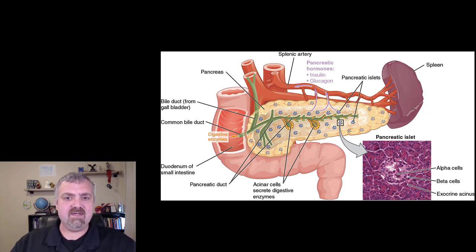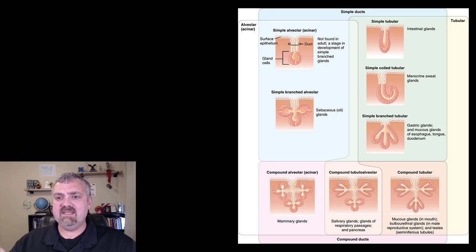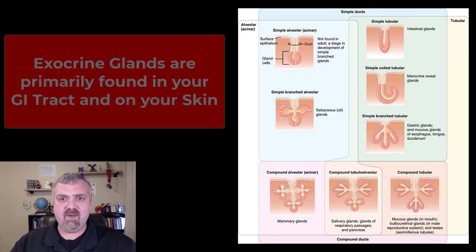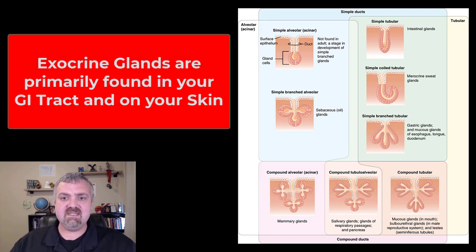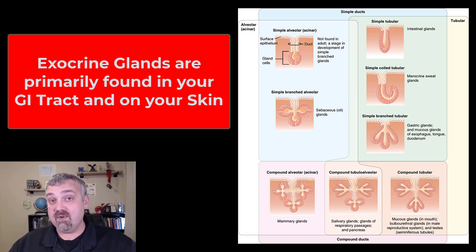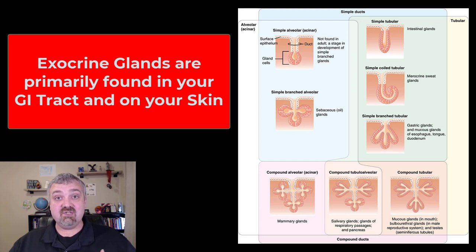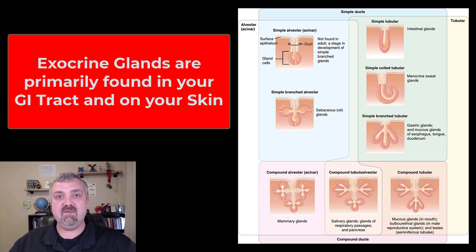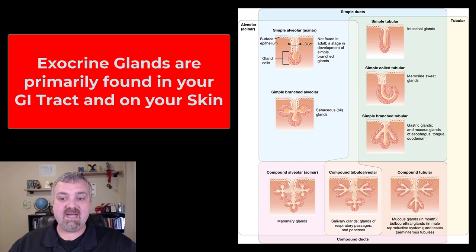Let me give you some examples and we'll come back to the pancreas. We have intestinal glands making digestive enzymes — we just mentioned those. The sebaceous glands of the skin that produce sebum, the oil on your body, would be a good example. Your sweat glands are also going to be exocrine glands. All of your skin glands that are dumping secretions onto your skin are going to be exocrine.